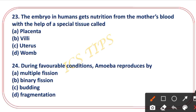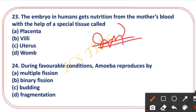The embryo in humans gets nutrition from the mother's blood with the help of a special tissue. This is a very important exam question — the right answer is the placenta. Option A — placenta is the correct answer.